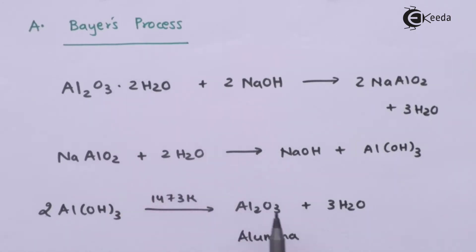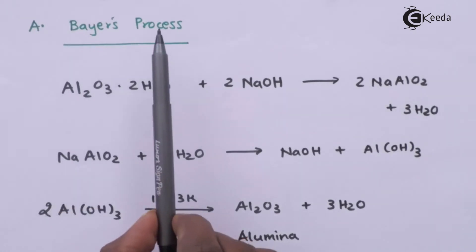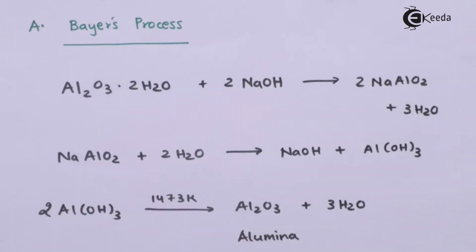This Al₂O₃ is basically known as alumina. So by removing the impurity from bauxite we have obtained alumina, which will be further taken into a process to obtain crude metal. This is why this process is known as leaching. This was Bayer's process; there is also another method known as Hall's process.